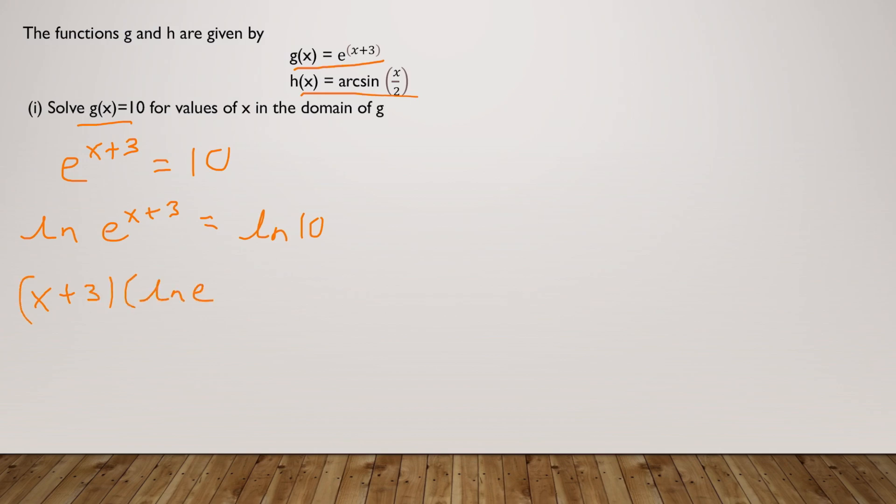I have x plus 3 times ln of e equals ln of 10. Now we know ln of e is just 1, so I have x plus 3 equals ln of 10, and x would be ln of 10 minus 3. And since you do not have the graphing calculator, this is your final answer which will get you full credit. I hope that was very simple and clear. Let's move ahead.